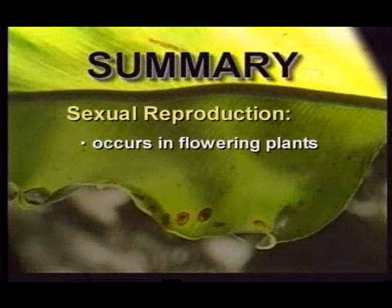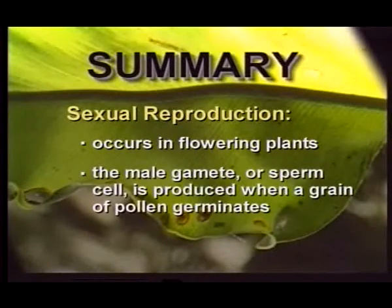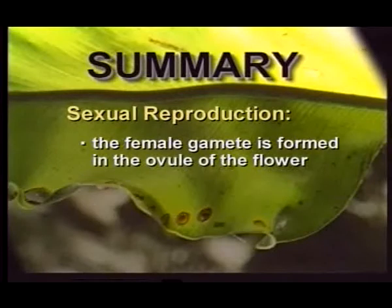Sexual reproduction occurs in flowering plants. The male gamete, or sperm cell, is produced when a grain of pollen germinates. The female gamete is formed in the ovule of the flower.